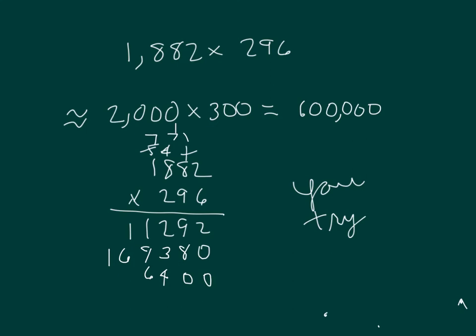2 times 8 is 16 again, plus 1 is 17. 7, regroup of 1. And then 2 times 1 is 2, plus 1 is 3. So I have those partial products where I have to add them together.